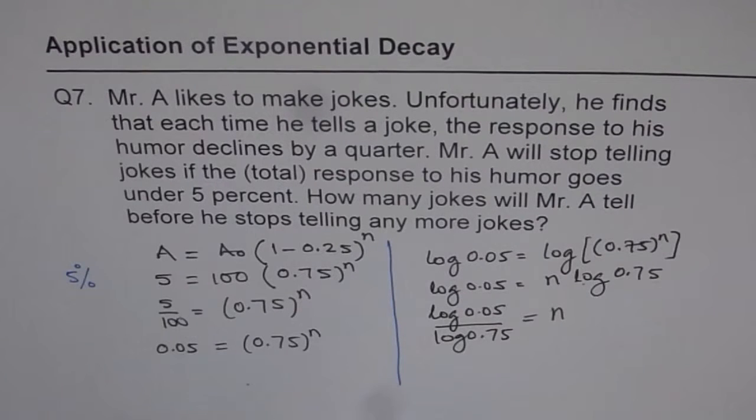So let's use a calculator to find what n is. So we get log of 0.05 divided by log of 0.75. So on the calculator we have two types of logs: log to the base 10 and ln. Use log to the base 10.